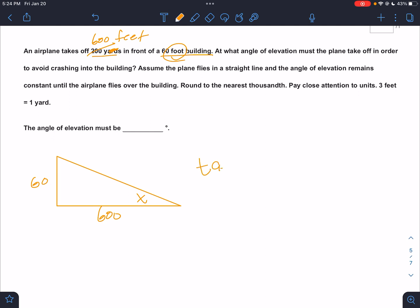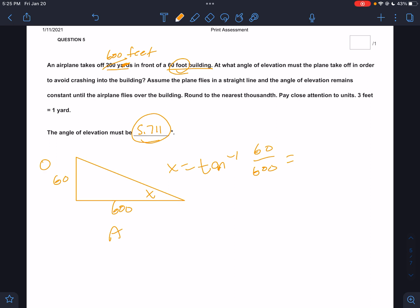Well, that's going to be opposite adjacent. That's going to be inverse tangent of opposite over adjacent. And that's going to be inverse tangent opposite over adjacent. I get, let's see, what are we rounding to? Nearest thousandths again. That's going to be 5.711. There we go.